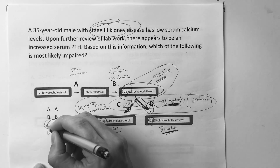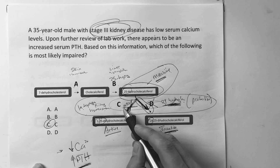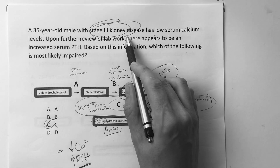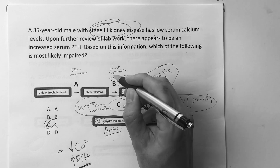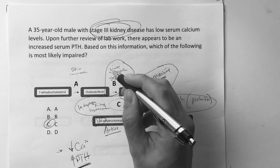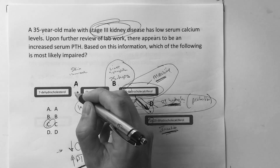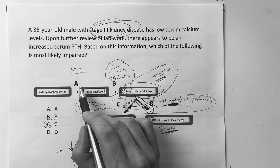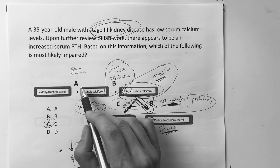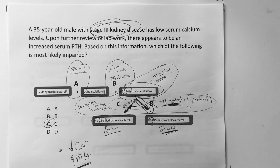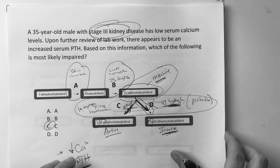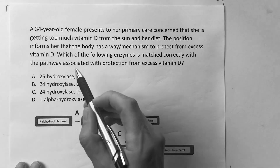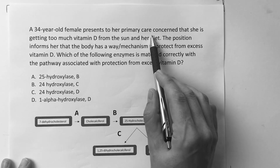So the correct answer is the one-alpha hydroxylase pathway — that's answer C. If the question mentioned liver issues, I'd go with 25-hydroxylase. If it mentioned malabsorption, elevated latitude, or dark skin pigmentation, I'd go with the isomerization step in the skin.